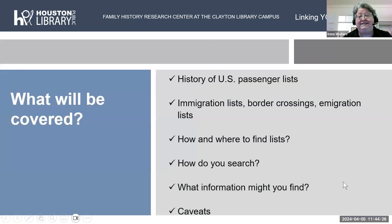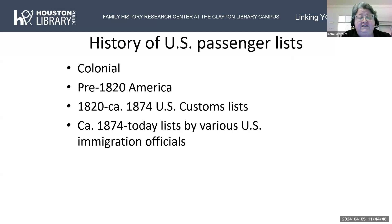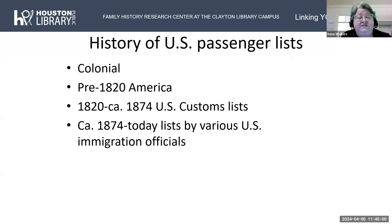What I will cover today is the history of U.S. passenger lists, immigration lists, border crossings, how and where to find lists, how to search, what information you might find, and some caveats for searching. I'll talk about Colonial and pre-1820 America, 1820 to 1874 U.S. customs lists, and then the circa 1874 through today lists kept by various U.S. immigration officials.